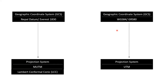Nowadays, GNSS has become the default method of surveying, and data surveyed by the GNSS method are based on WGS84 Datum. Latitudes and longitudes based on WGS84 are converted into easting-northing coordinates by applying the MUTM projection system.